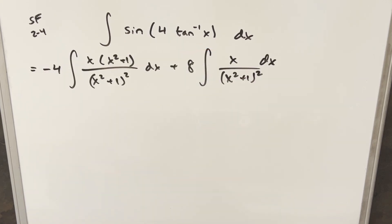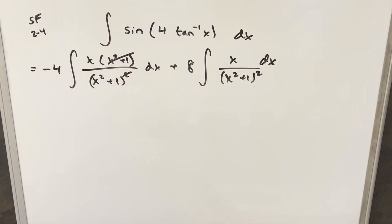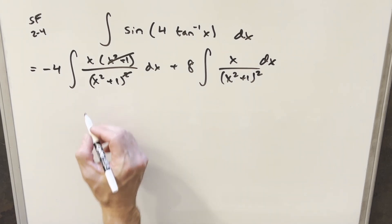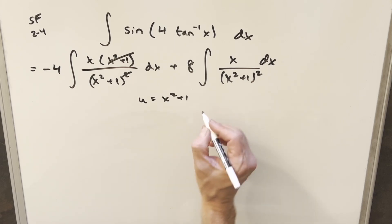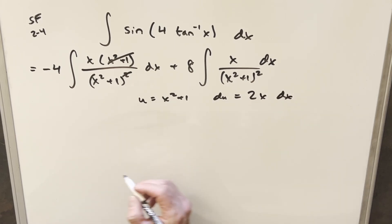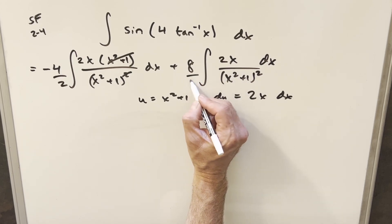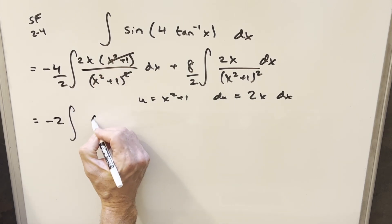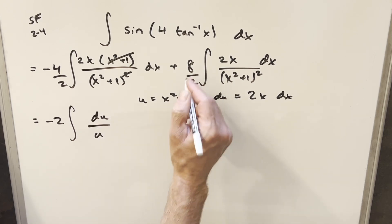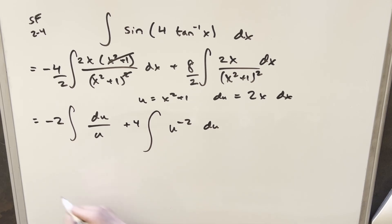After quite a bit of algebra we've arrived at these two integrals. For the first one, we can cancel one factor of (x²+1). I'll do a u-substitution for both — so we didn't avoid it entirely. Let u = x²+1, then du = 2x dx. Multiplying and dividing by 2 in each integral, the first becomes −2∫du/u and the second becomes 4∫u^(−2) du.